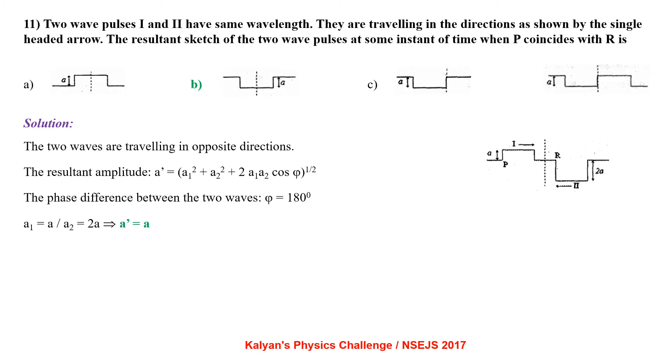Two wave pulses 1 and 2 have the same wavelength. They are travelling in directions as shown by the single headed arrow. The resultant sketch of the two wave pulses at some instant of time when P coincides with R is. The two waves are travelling in opposite directions. The resultant amplitude A dash equal to root of A1 square plus A2 square plus 2A1 A2 cos phi. The phase difference between the two waves is 180 degrees as they are travelling in opposite directions. So we get A dash equal to A.